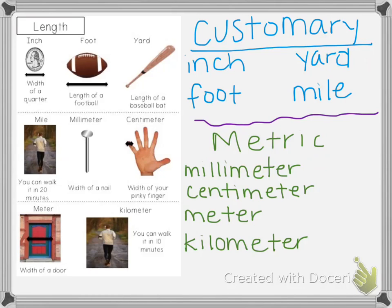The metric measurements are the primary measurement system in most other countries in the world. For length, those are the millimeter, centimeter, meter, and kilometer. You've got some benchmarks to help you there as well. A millimeter is about the width of a nail. A centimeter is about the width of your pinky finger. A meter is about the width of a door. And a kilometer — you can walk it in about 10 minutes.